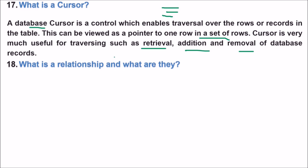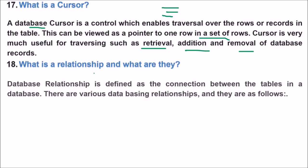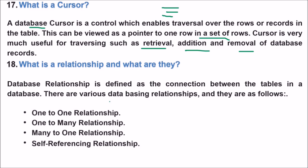What is a relationship and what are its types? A relationship is defined as the connection between tables in a database. There are various types: one-to-one, one-to-many, many-to-one, and self-referencing relationships.